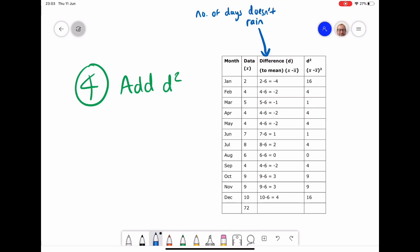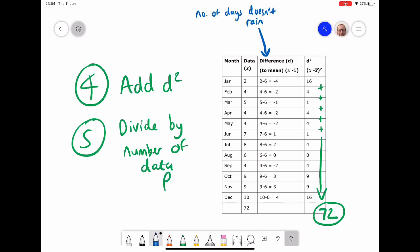The next step is to add all those figures that we have in the difference squared column. So I would add up all of these in that final column and if I add them all together I get a total of 72. But then what I have to do with that 72 is divide it by the number of pieces of data we have, the number of data points. I need to count up how many pieces of data I've got, and because it's months in a year I have 12, so it's 72 divided by 12 equals 6.